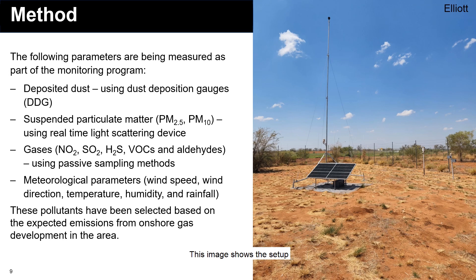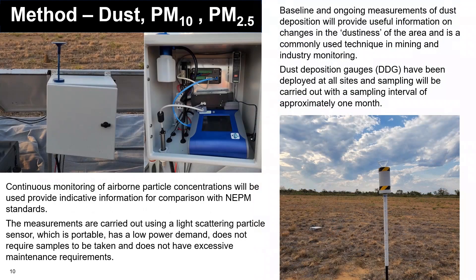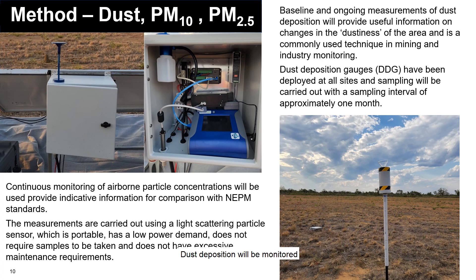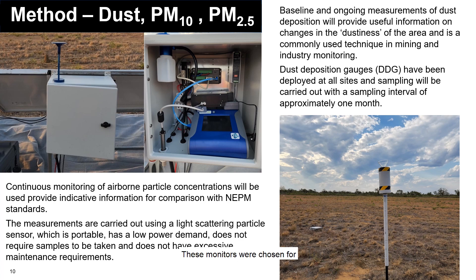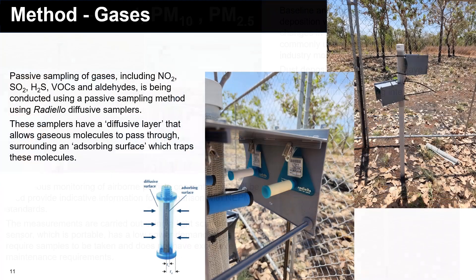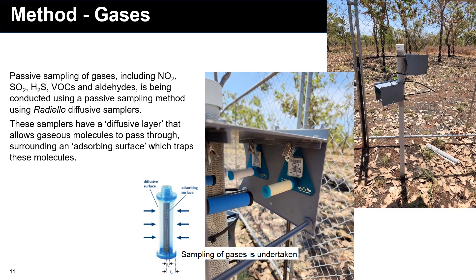This image shows the setup of one station at Elliott. Deposited dust is measured using a dust deposition gauge and allows the measurement of an area's dustiness. Dust deposition will be monitored in accordance with Australian standards with a sampling period of approximately one month. Monitoring of suspended particulates is continuous, with measurements using a light scattering particle sensor. These monitors were chosen for their low power demand and small maintenance requirements. Sampling of gases is undertaken using a passive sampling method using diffusive samplers, with a sampling period also of approximately one month.